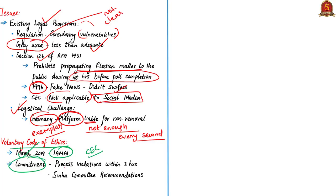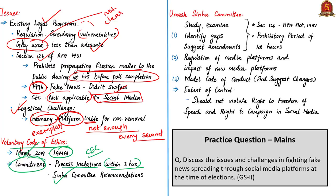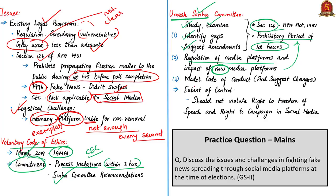The document is a set of commitments by social media platforms who agreed to process any violation reported under Section 126 within three hours, as per SINHA committee recommendations. This committee—also called the Committee on Section 126 of Representation of People Act 1951—had a senior deputy election commissioner as chairman. The committee was asked to study and identify difficulties and critical gaps, suggest necessary amendments with special reference to Section 126 and the 48-hour prohibitory period, examine the type of communication technology or media platform, and suggest changes to the model code of conduct. The committee presented its report in January 2019.